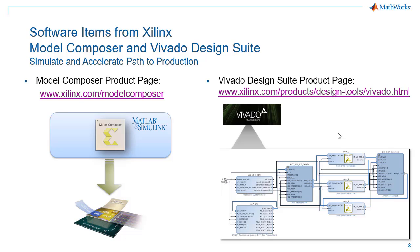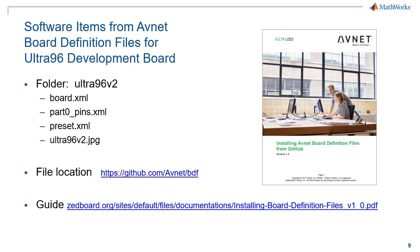You'll also need Vivado Design Suite — the environment where you can do synthesis, perform analysis, and create your final bitstream to program your FPGA device. Here's where you can find more information on Vivado Design Suite. And then lastly, you'll need a few more items from AvNet: the board definition files. These files connect and link the design tools to the AvNet Ultra96 development board. The files are located on GitHub, and there's also an installation guide that tells you how to download the files, how to install them, and how to get your project environment up and running.